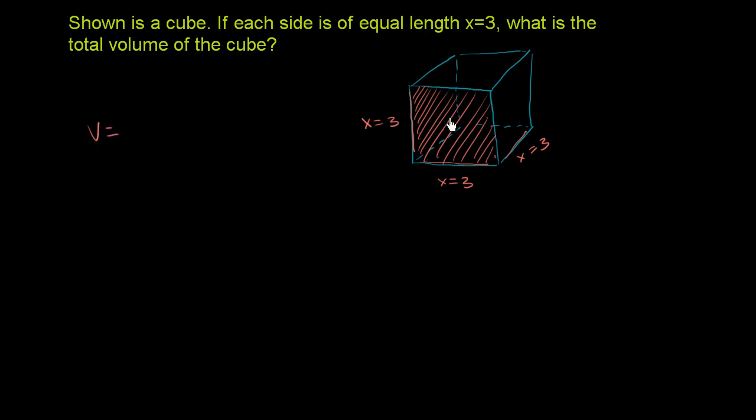So the volume is going to be the area of this surface. 3 times 3 times the depth. And so we go 3 deep. So times 3. And so we get 3 times 3 times 3 is 27.